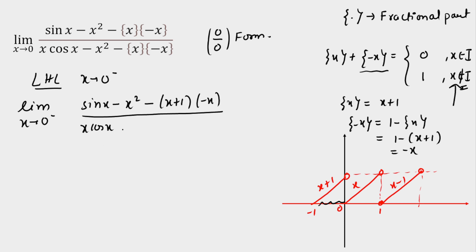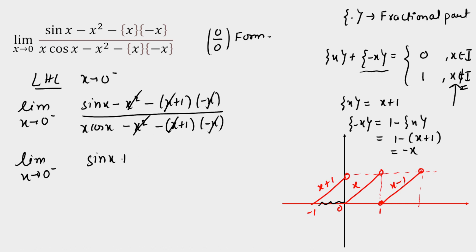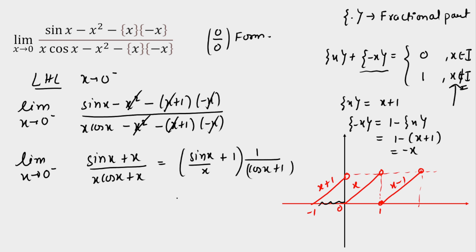Substituting into the expression: numerator becomes sin(x) − x² − (x + 1)(−x) = sin(x) − x² + x² + x = sin(x) + x. Denominator becomes x·cos(x) − x² + (x + 1)(−x) = x·cos(x) + x. The x² terms cancel. Factoring x out gives [sin(x)/x + 1] / [cos(x) + 1]. As x → 0⁻, sin(x)/x → 1, so numerator → 1 + 1 = 2 and denominator → cos(0) + 1 = 2, giving 2/2 = 1.